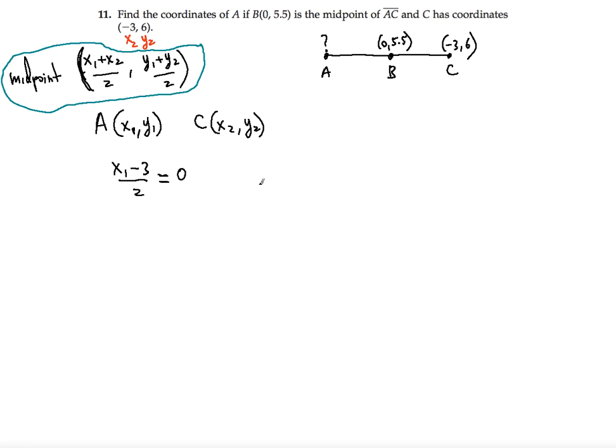And then likewise, we're going to do the same thing for y. So y1, now y2 is 6, so plus 6 divided by 2, and we set it equal to the y value of the midpoint, which is 5.5.